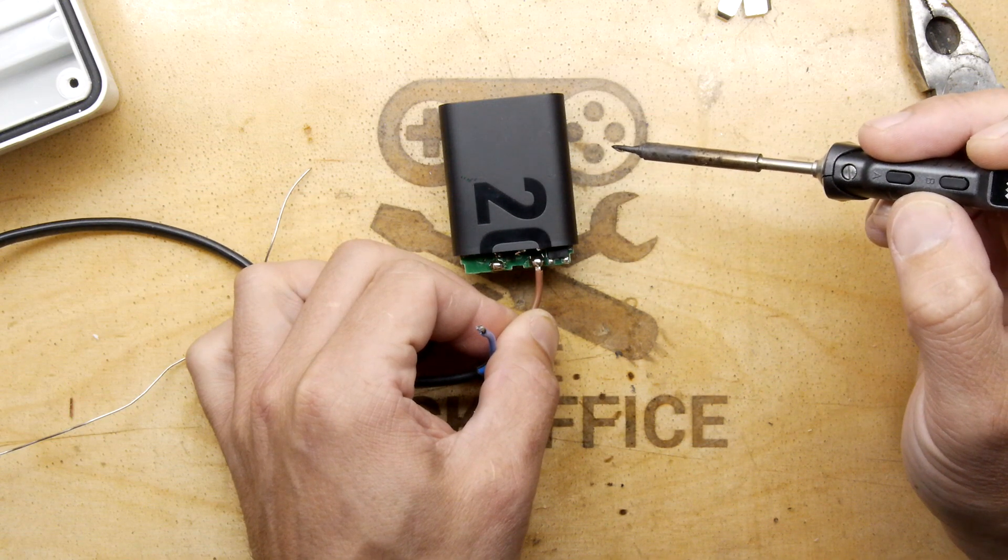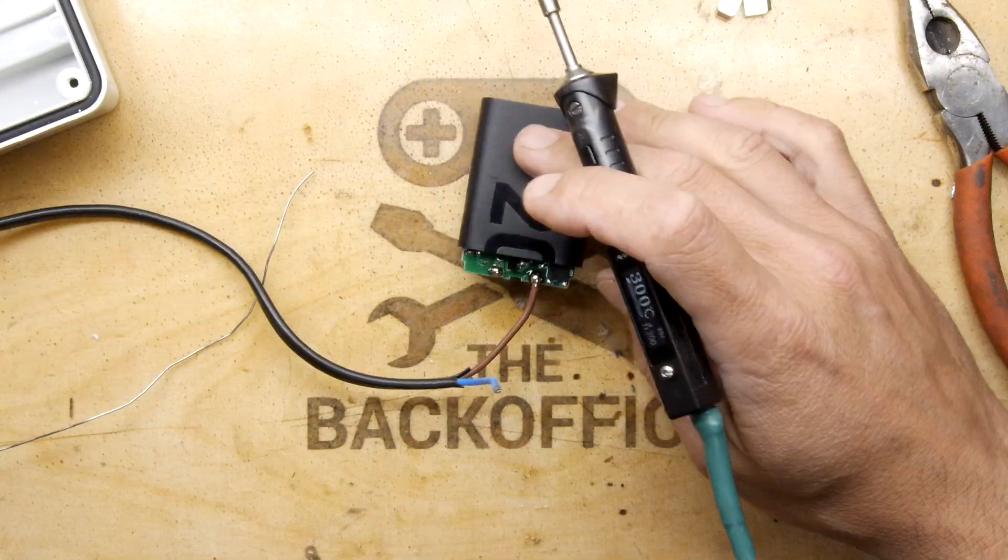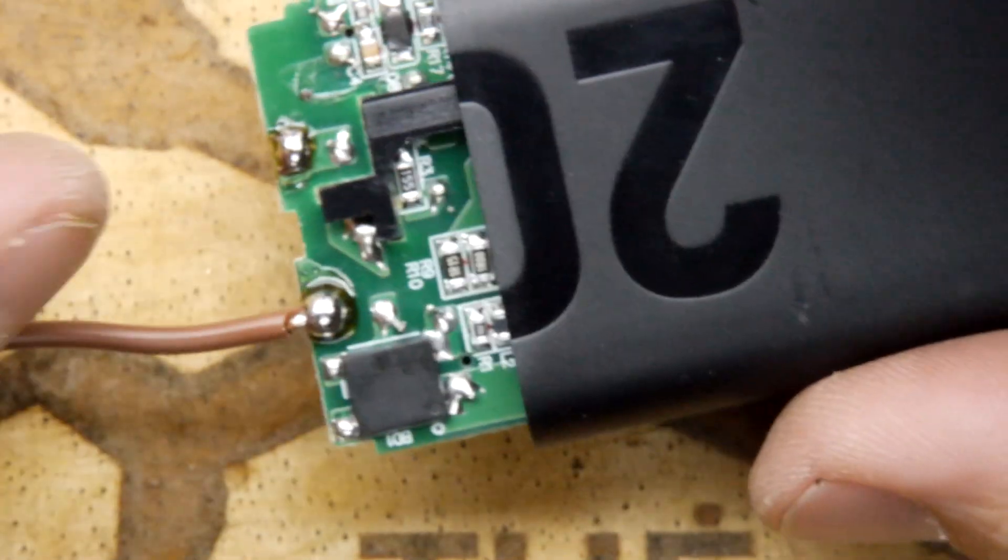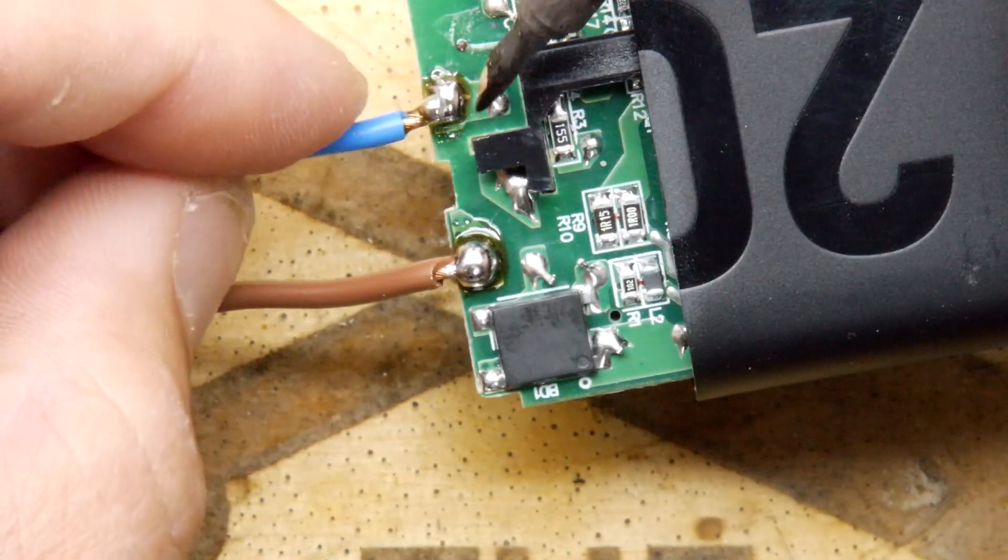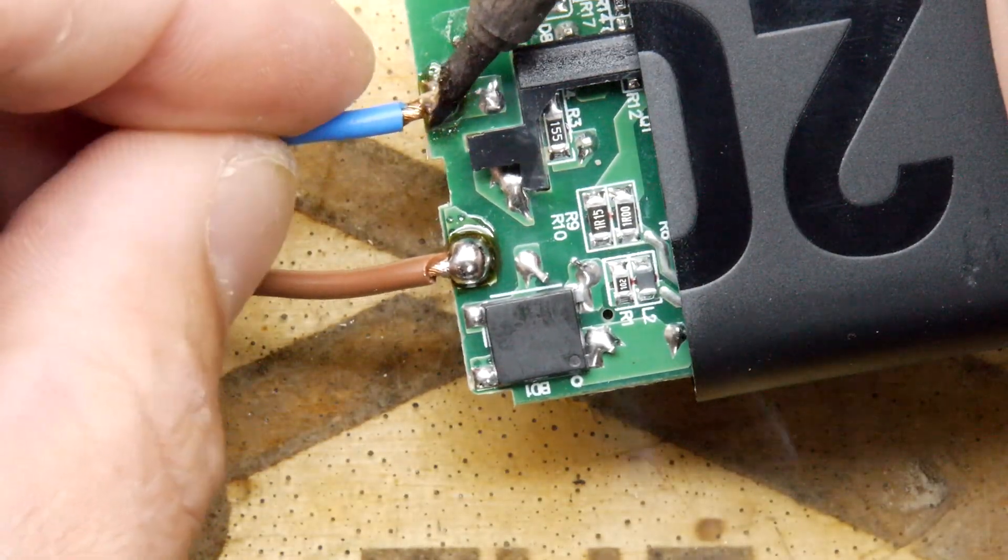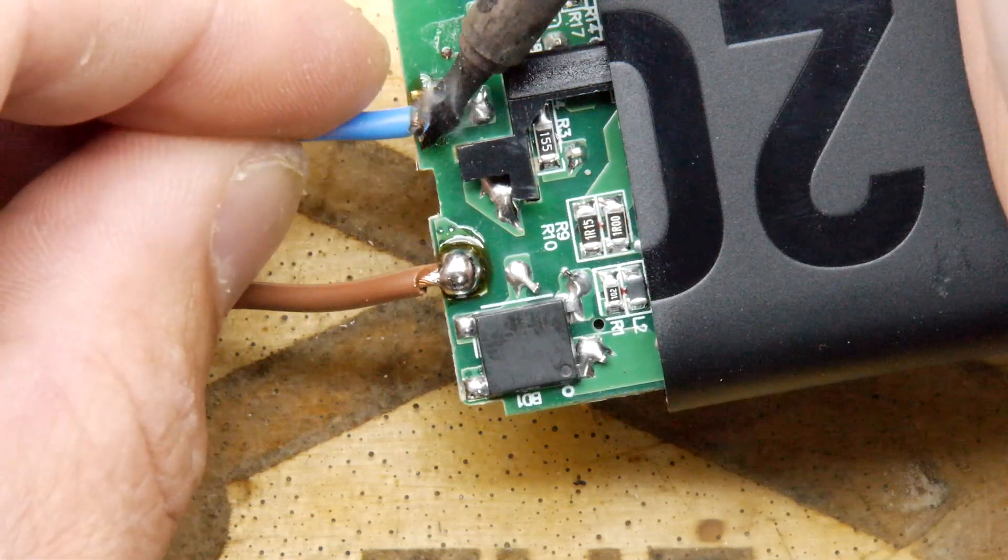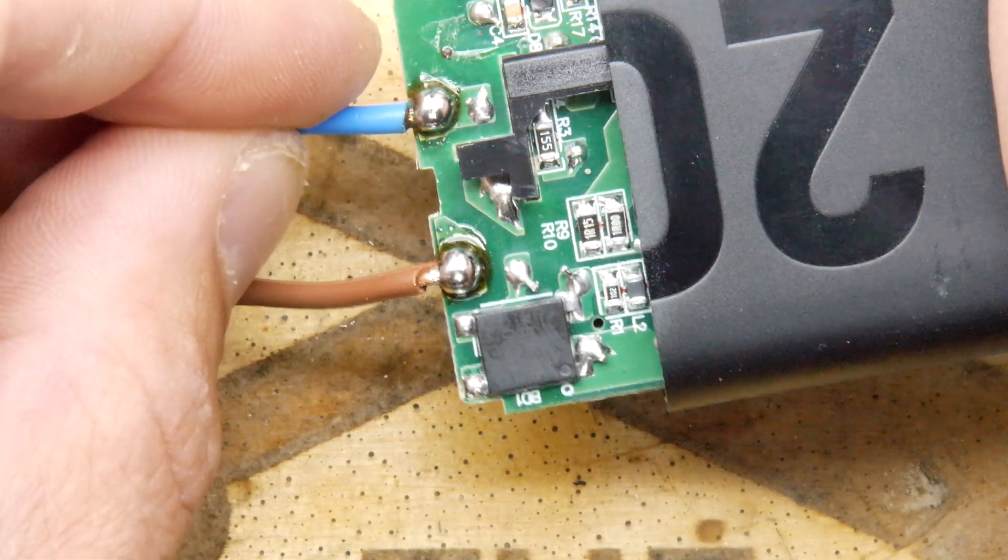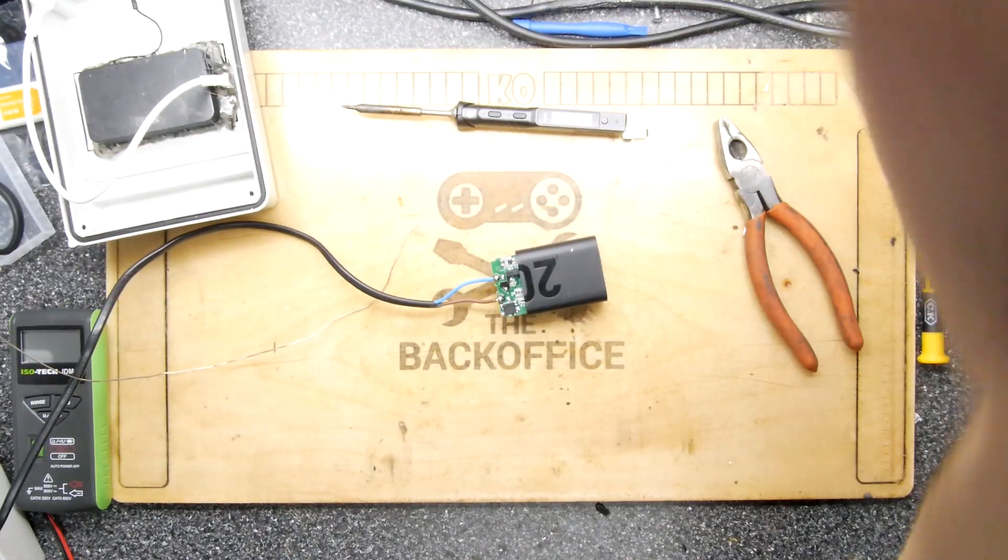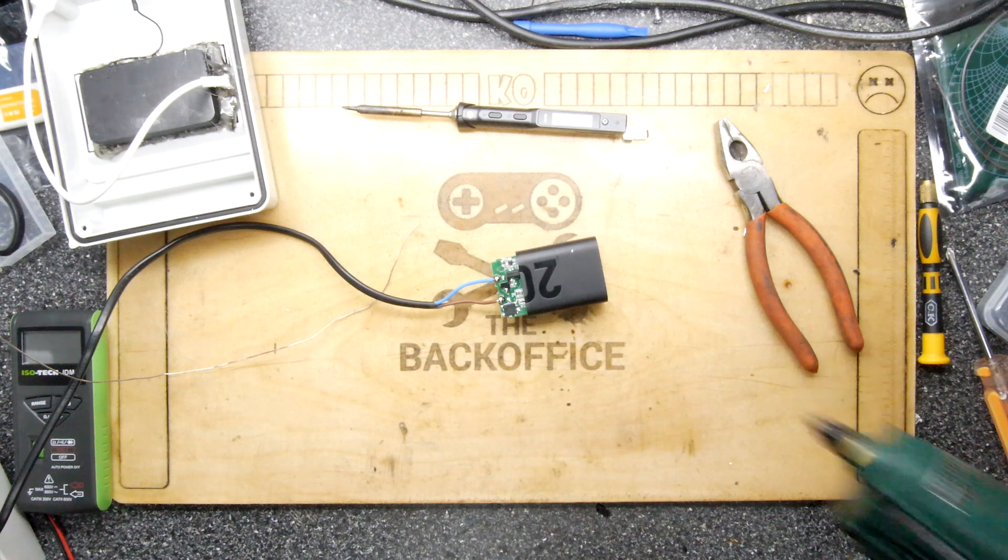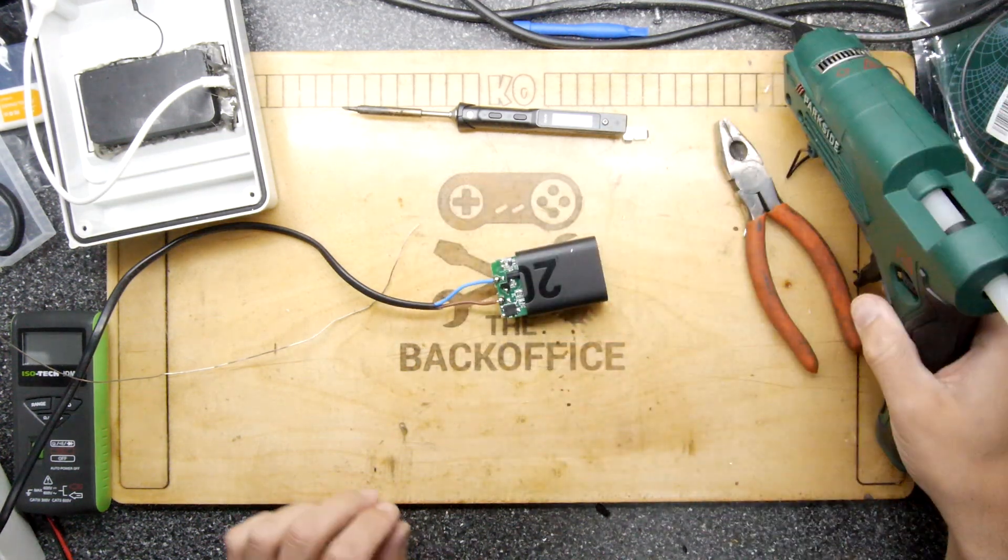But before we solder that on, I'm just going to trim them right back. We want them at their minimum, really. That's a nice one, that is a nice one indeed. Let's see if we can do the same for neutral. I think we can, we're in all the control here. Yep, that is looking nice.